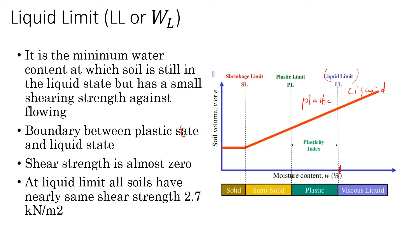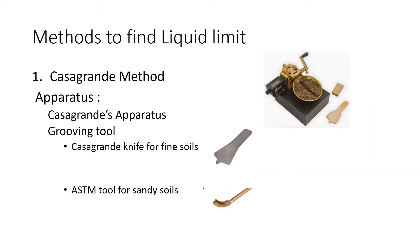At the liquid limit, all soils have a shear strength of approximately 2.7 kN/m². In the liquid state the shear strength is essentially 0. The method used to determine this is the Casagrande method.